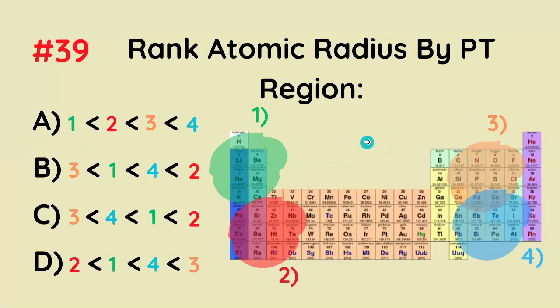Rank atomic radius by periodic table region. The correct answer is that top right is the smallest, bottom right is the second biggest, top left is the second smallest.